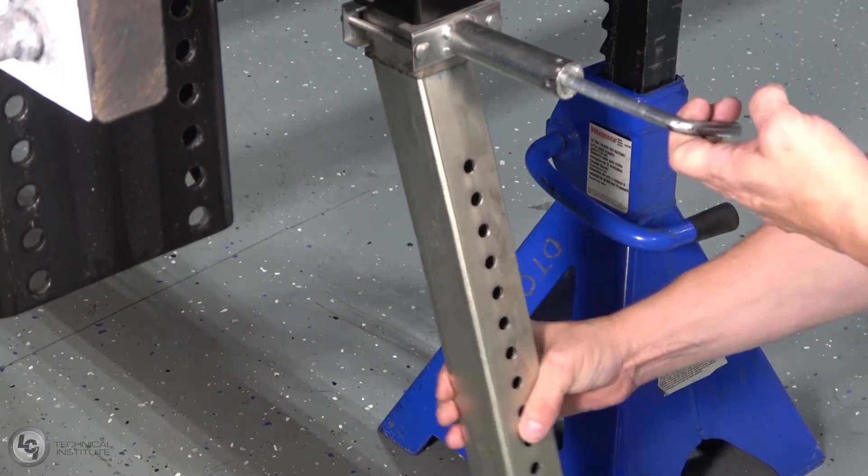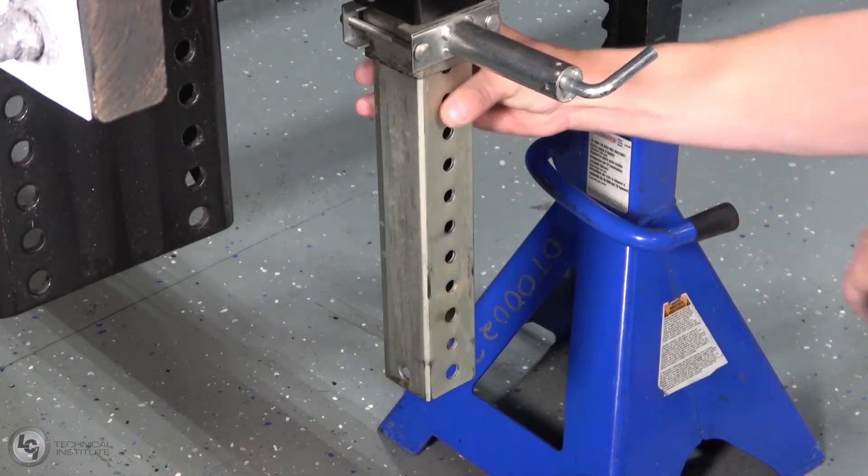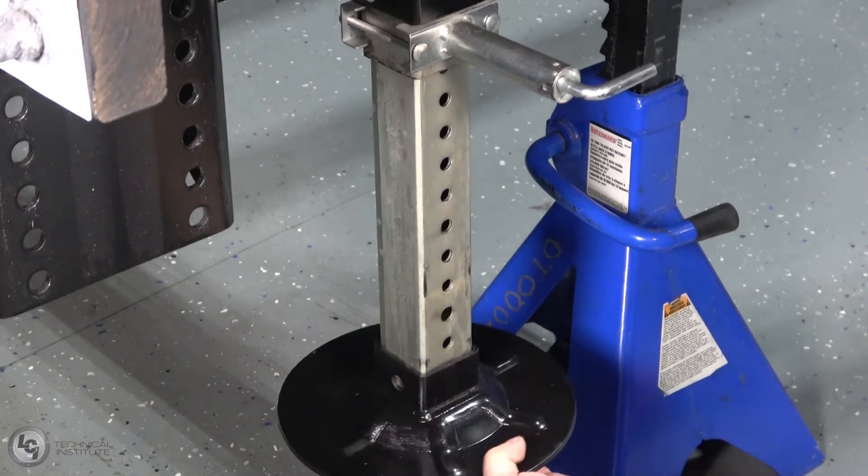Slide the new inner leg into position by pulling the pull pin back and secure it in the same position as when you removed it.